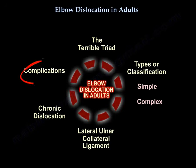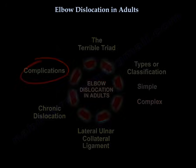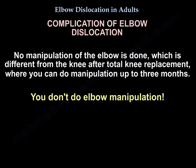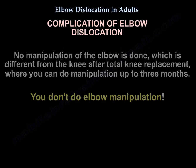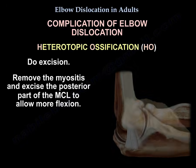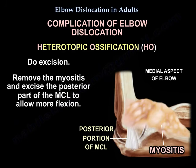Complications of elbow dislocation include loss of terminal extension and decreased range of motion — treat with static progressive splinting between 6 to 10 weeks. Do not manipulate the elbow, which is different from the knee after total knee replacement where manipulation is done up to 3 months. For heterotopic ossification, do excision and excise the posterior part of the MCL to allow more flexion.